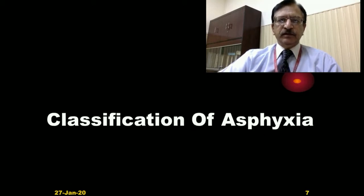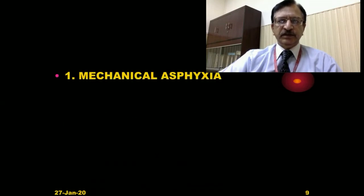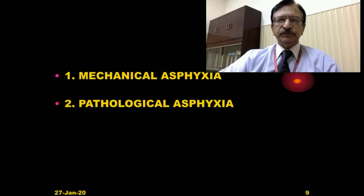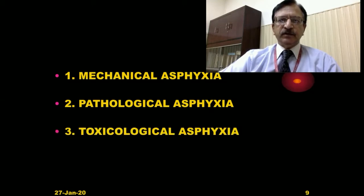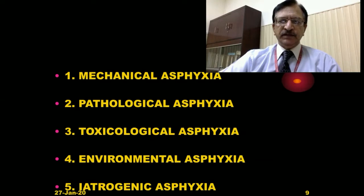Regarding the classification of asphyxia, we have already discussed mechanical asphyxia, which is the most important from a forensic point of view. Pathological asphyxia occurs because of some diseases. Toxicological asphyxia occurs when certain poisons interfere with the process of respiration. Environmental asphyxia occurs when oxygen is deficient or the environment has been replaced by other irrespirable gases, as in war gases and sewer gases, which produce environmental asphyxia.